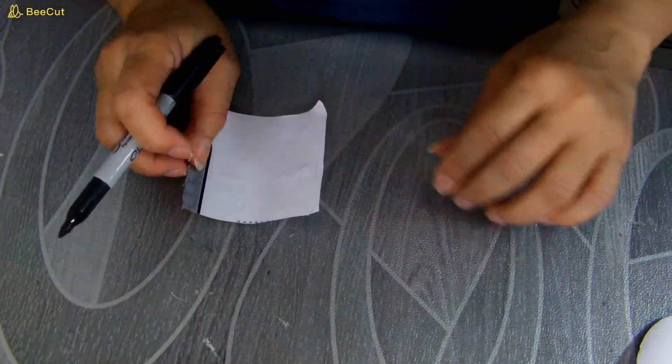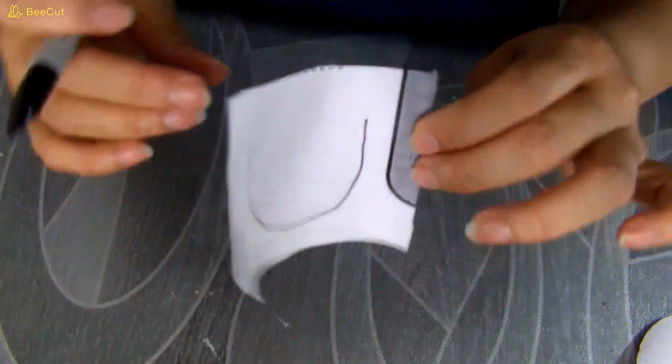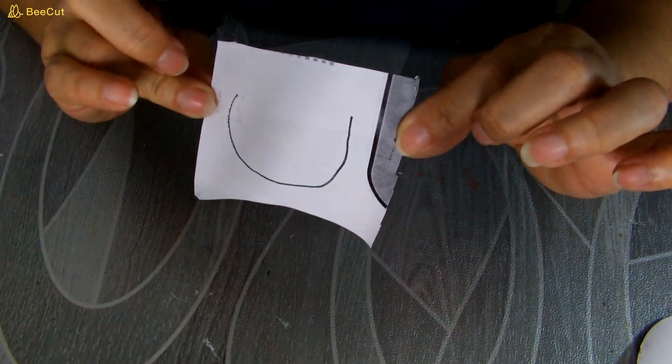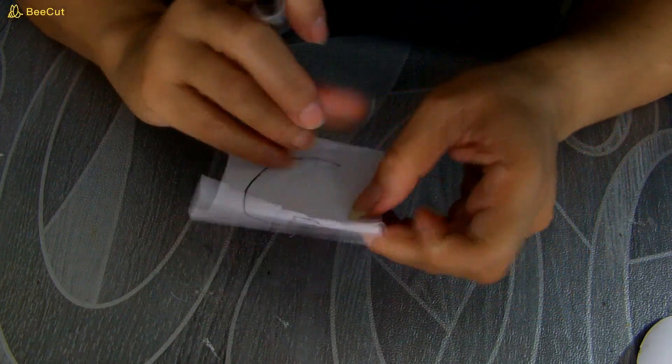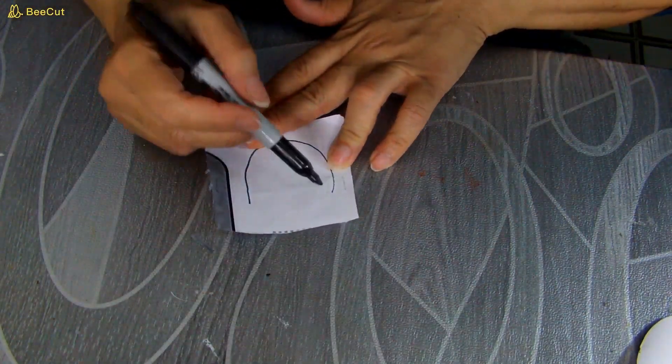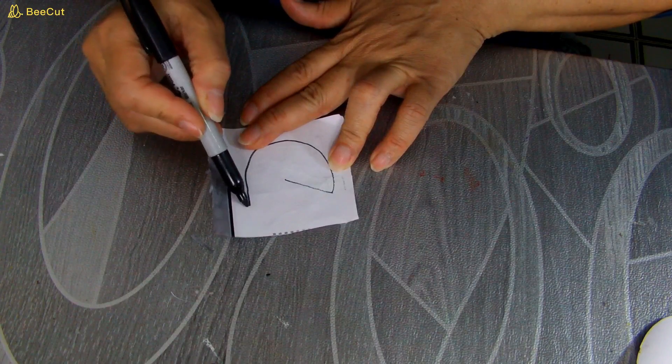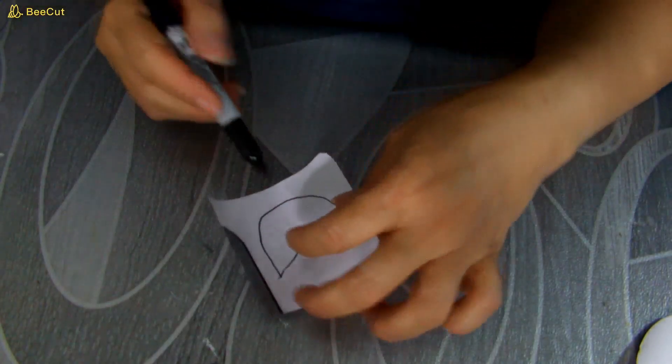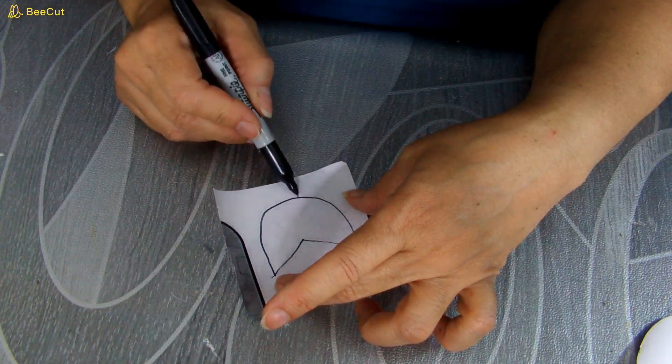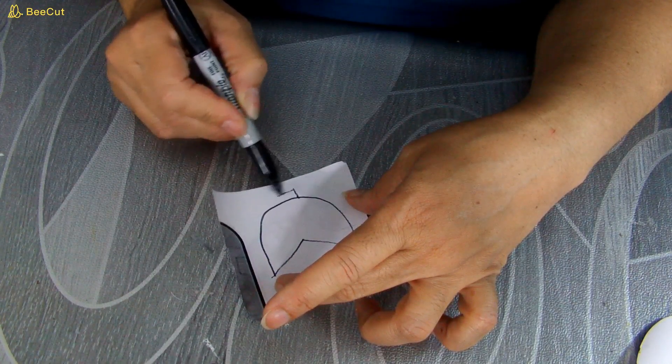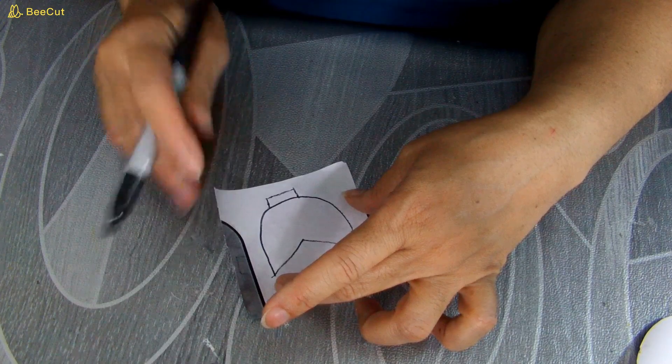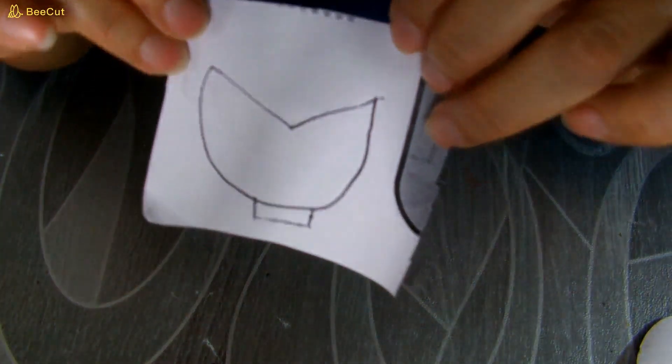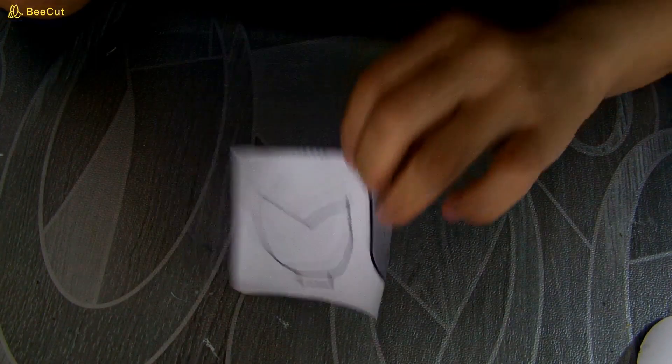Y para hacer el otro molde vamos a hacer algo así, ¿ven? Pueden ir haciéndolo conmigo. Y luego que lo tengamos así, simplemente aquí vamos a hacer una V. Y aquí abajo simplemente vamos a hacerle un rectangulito. Y este otro lo vamos a estar recortando también.